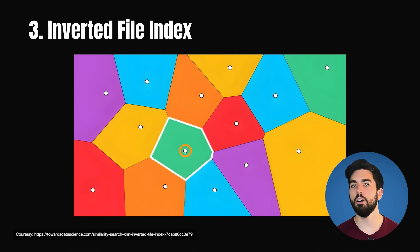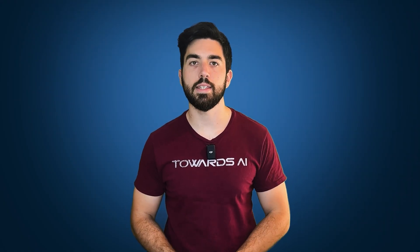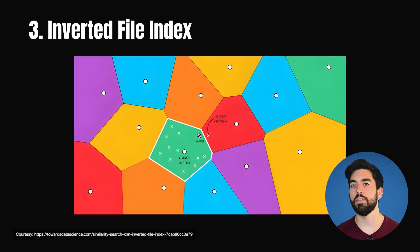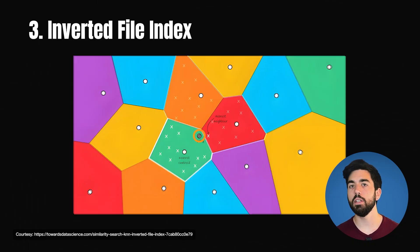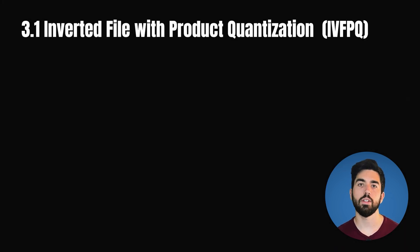We calculate all embeddings of our dataset and then group them using automatic algorithms that split our embeddings into dense groups based on resemblance. In our library example, comedy books might all be put together because of the laughs and other similar traits. One problem with this method is that when a query lies on the boundary of multiple clusters, we tend to search all of them. An improved version is called inverted file product quantization, or IVFPQ.